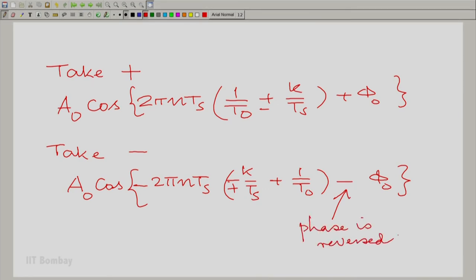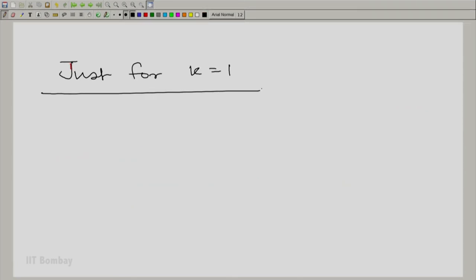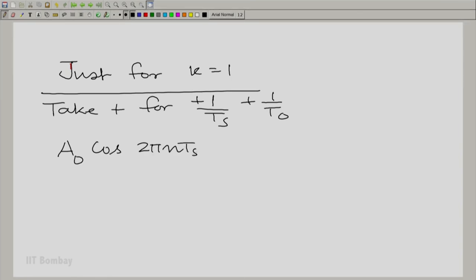So let us take plus for 1/T_0 plus 1/T_s, which tells you the expression is A_0 cos 2π nT_s (1/T_0 + 1/T_s) + phi_0.